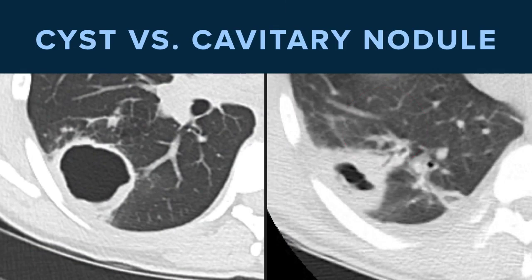What about cysts versus cavitary nodules? It can be challenging. Here we have two different patients — how would these lesions be managed in Lung RADS? At what point does a thick-walled cyst become a cavitary nodule, or a cavitary nodule become a thick-walled cyst? In general, a cavitary nodule is a nodule that was previously solid and has now developed central lucency, but that requires prior studies to actually see that evolution. So the approach in lung cancer screening, since we may not have prior exams, is going to be based upon the features of the lesion itself.